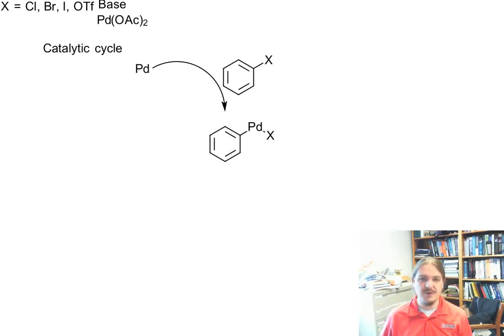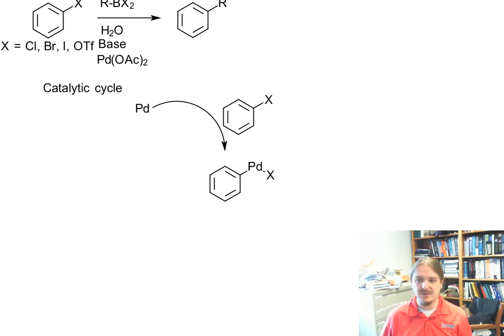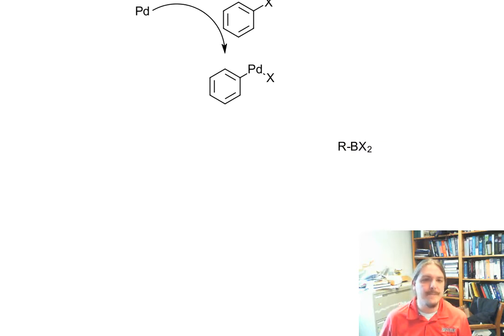The next step involves the organoboron reagent, which itself isn't as reactive as it could be. And so what actually happens here, since this is done in the presence of water and base, you initially get activation of the organoboron compound by reacting with hydroxide. And then this forms the boron and whatever my X's are, OH, our R group, and the boron has a negative charge. Now we have this activated boron thing.